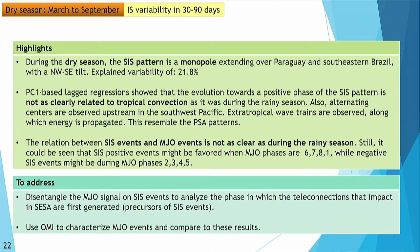The highlights for the dry season: the pattern is a monopole, as seen in the 10-to-90-day variability. It is not as clearly related to tropical convection as during the rainy season, but extratropical wave trains are observed along which energy propagates, also along the subtropical latitudes resembling the PSA pattern. The relation between the dry season and the MJO is not as clear as during the rainy season, and we need to address precursors of SIS events in this season.